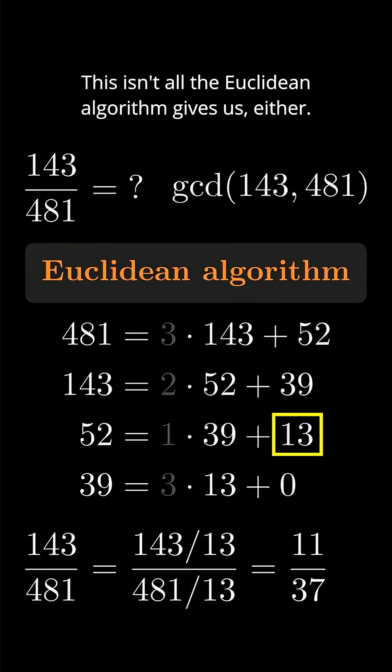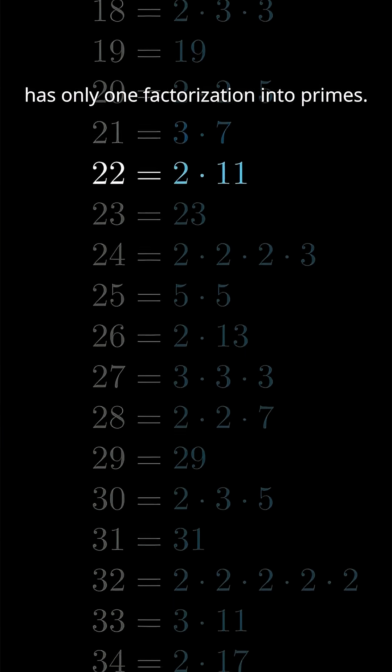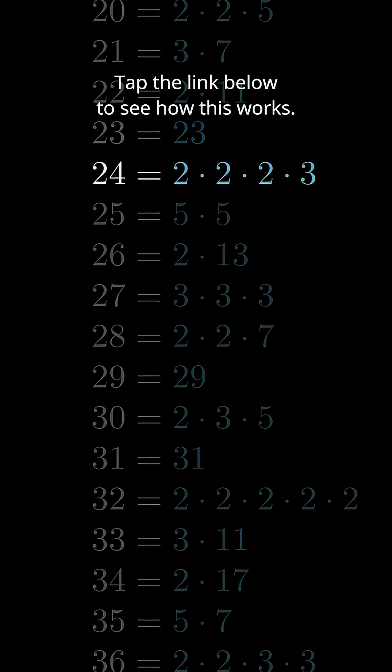This isn't all the Euclidean algorithm gives us either. It lets us explain why every natural number has only one factorization into primes. Tap the link below to see how this works.